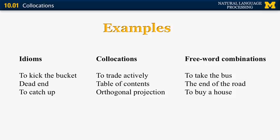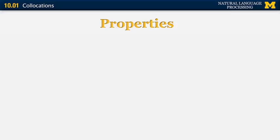The third category is free word combinations, which are common words whose combination is compositional and doesn't convey any special meaning. For example, to take the bus just means there's a bus and you take it and go somewhere. Other examples are the end of the road or to buy a house. We're not interested in free word combinations — we're mostly interested in idioms and collocations, and in particular collocations.